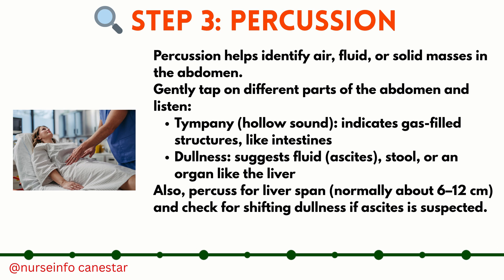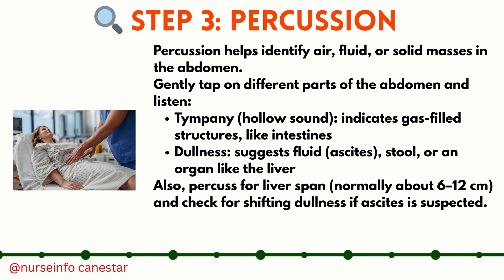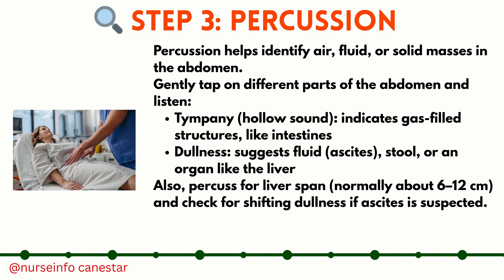Step three: percussion. Percussion helps identify air, fluid, or solid masses in the abdomen. Gently tap on different parts of the abdomen and listen. Tympani — a hollow sound — indicates gas-filled structures like intestines. Dullness suggests fluid (ascites), stool, or an organ like the liver. Also percuss for liver span, normally about 6 to 12 cm, and check for shifting dullness if ascites is suspected.